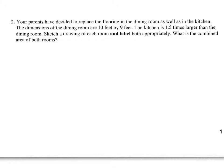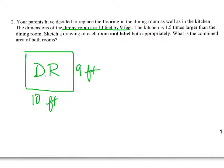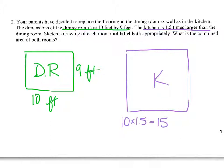Problem number 2 says that your parents decided to replace the flooring in the dining room and the kitchen. The dimensions of the dining room are 10 by 9 feet. So let's go ahead and draw that. Dining room: 10 feet by 9 feet. The kitchen is 1.5 times larger than the dining room. If it's 1.5, we're going to multiply the original by 1.5 to get 15 feet. And 9 times 1.5 to give us 13.5 feet and 15 feet. It says sketch a drawing, which we already did. Label both appropriately, which we did.